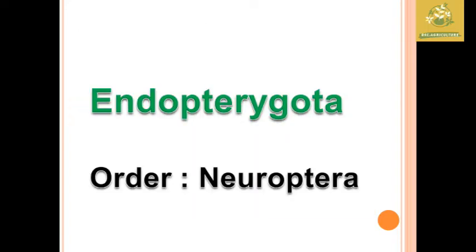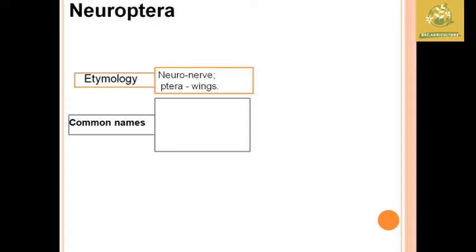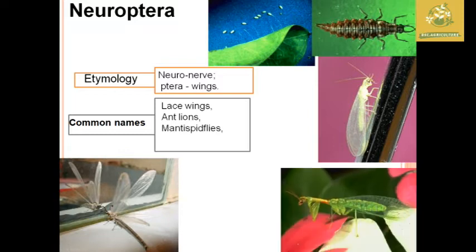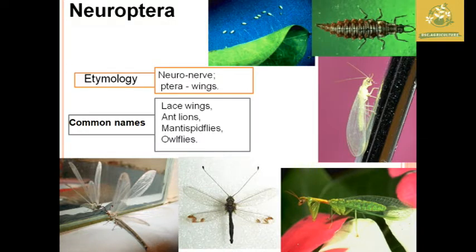First we are going to see about the Order Neuroptera. Regarding the etymology, the name 'neuro' means nerve and 'tera' means wings, so these are the nerve-winged insects. Lacewings, ant lions, mantispid flies, and owl flies are the four common names found in the Neuroptera. These are the images of lacewings and ant lions.